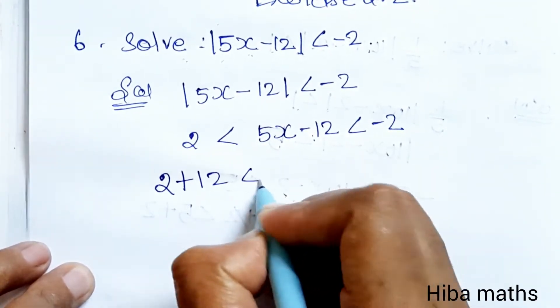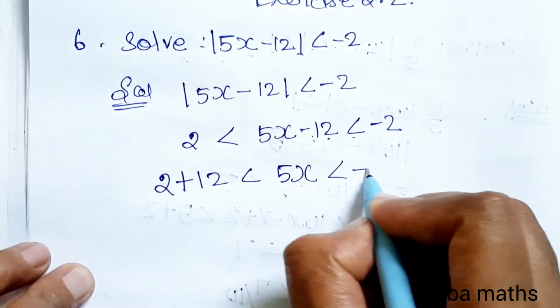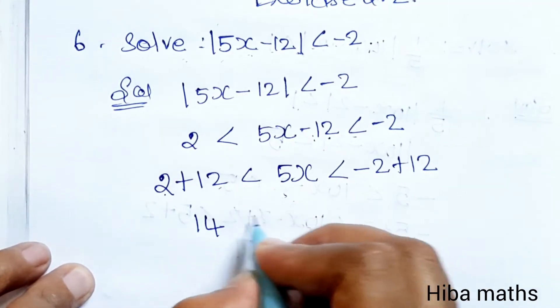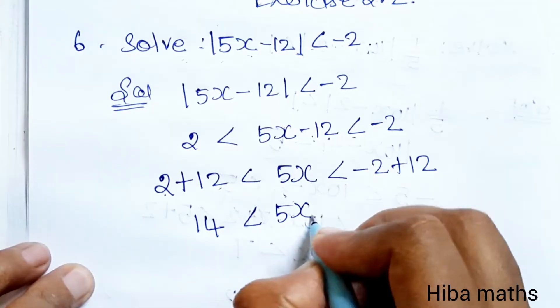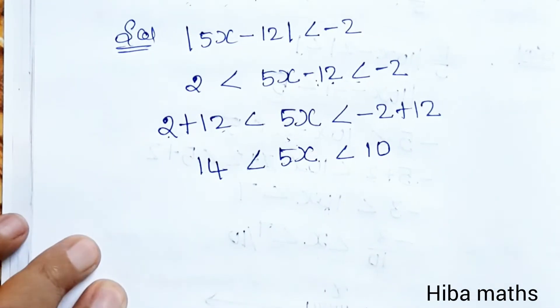2 plus 12 is less than 5x. Plus 12 minus 12 cancel. 14 is less than 5x, less than minus 2 plus 12.